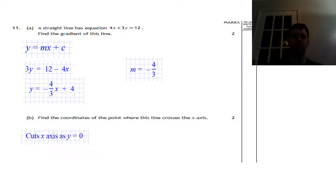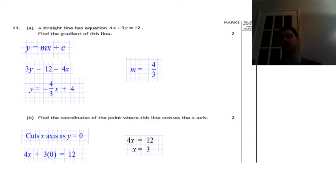You could use the equation you got. Either one's fine. You should set y equal to 0. I used the first one because it was easiest. So 4x plus 3 zeros equals 12. 3 zeros are 0. So 4x is 12. That means x must be 3. So again that's another quite standard problem.